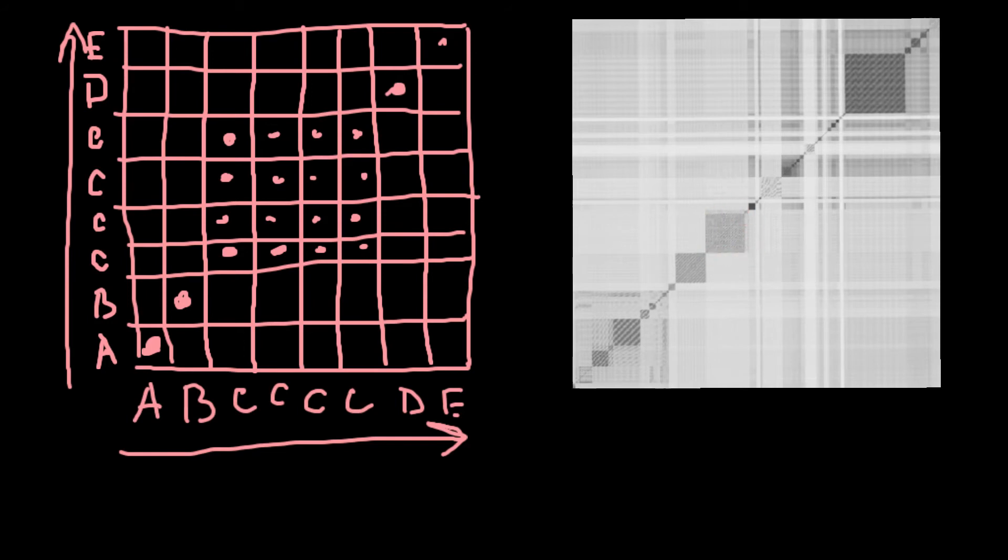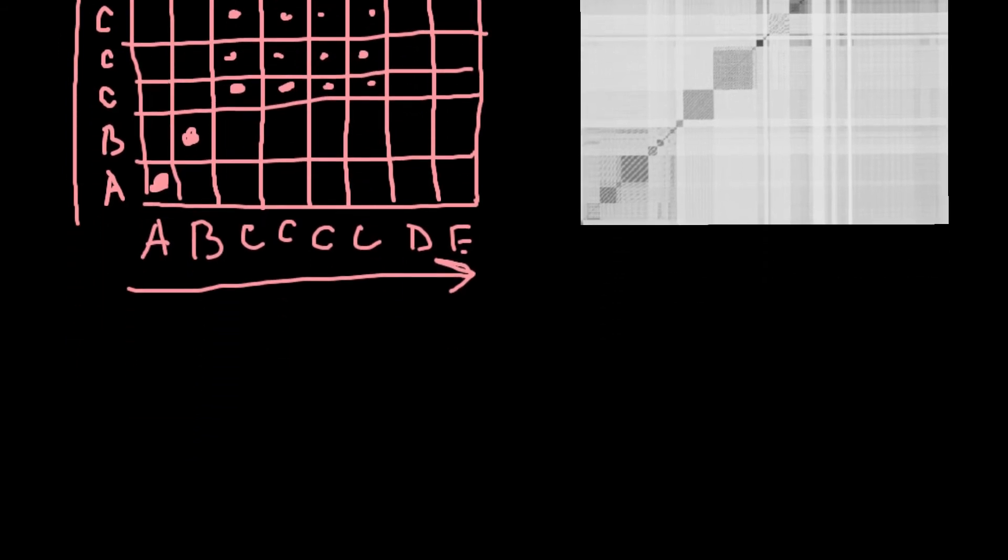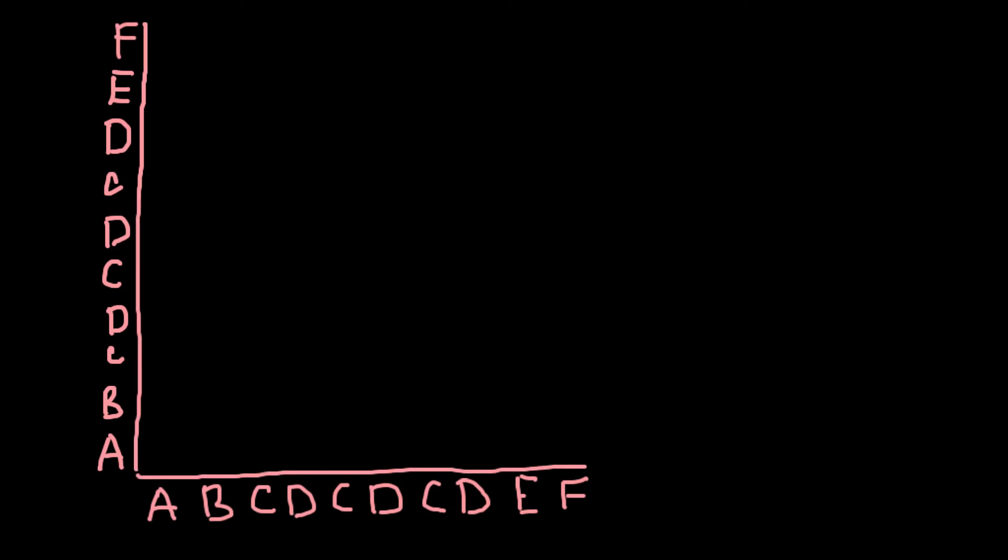And what about boxes that is lighter in color? And here is another example. Imagine that this time we have a polynucleotide chain that would be as follows. So A, B, C, D, C, D, C, D, and E, F. So once again, we make a grid. And I will speed up the video in order to save time.